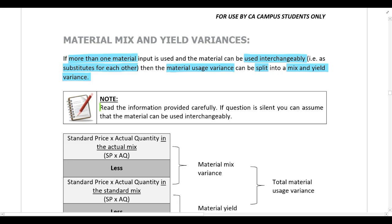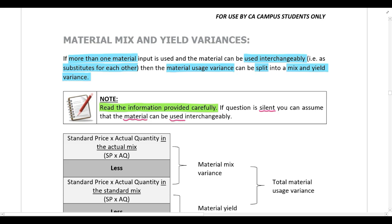However, you need to read the information provided very carefully. You might have a situation where materials can't be used interchangeably — for example, in car manufacturing you can't substitute two steering wheels for a steering wheel and a front bumper. In that case, you can only calculate the usage variance in total and cannot split it into mix and yield. If the question is silent — for instance, materials are just called Material A and B or Material X and Y — you can assume they are interchangeable and the usage variance can be split into mix and yield.